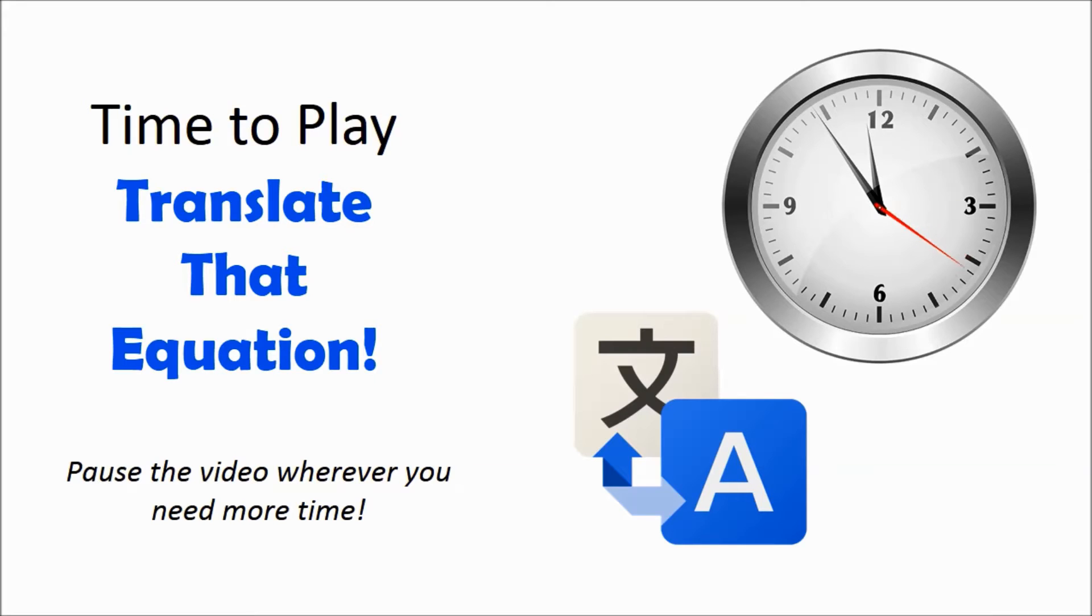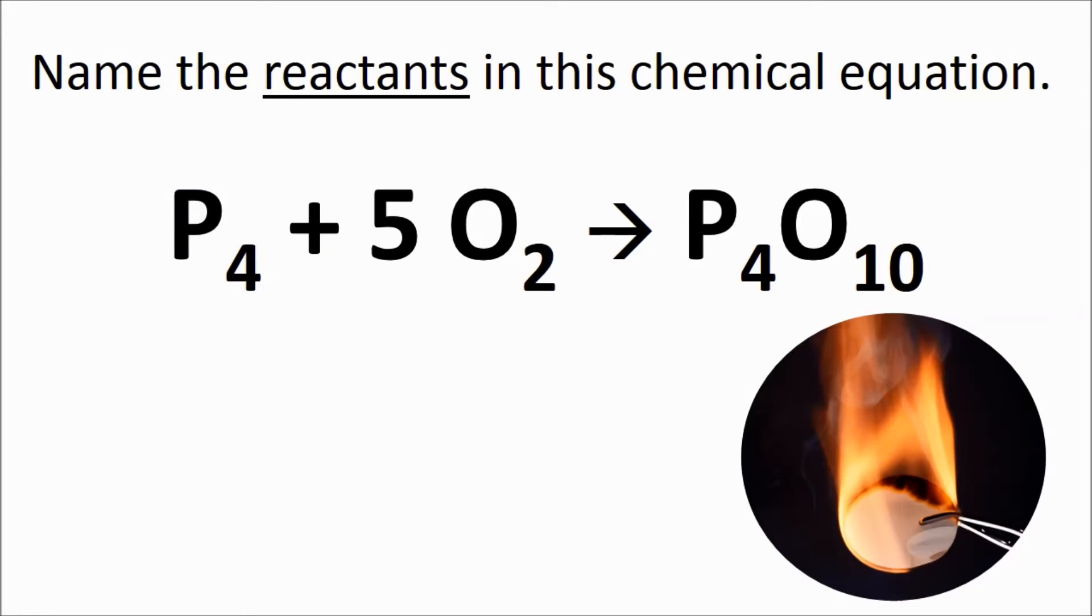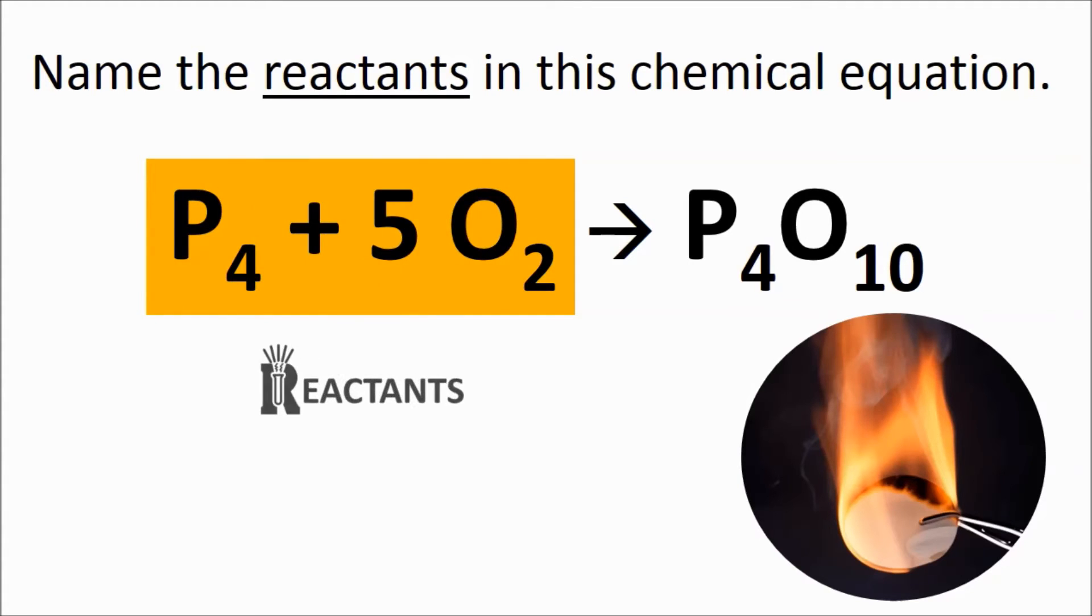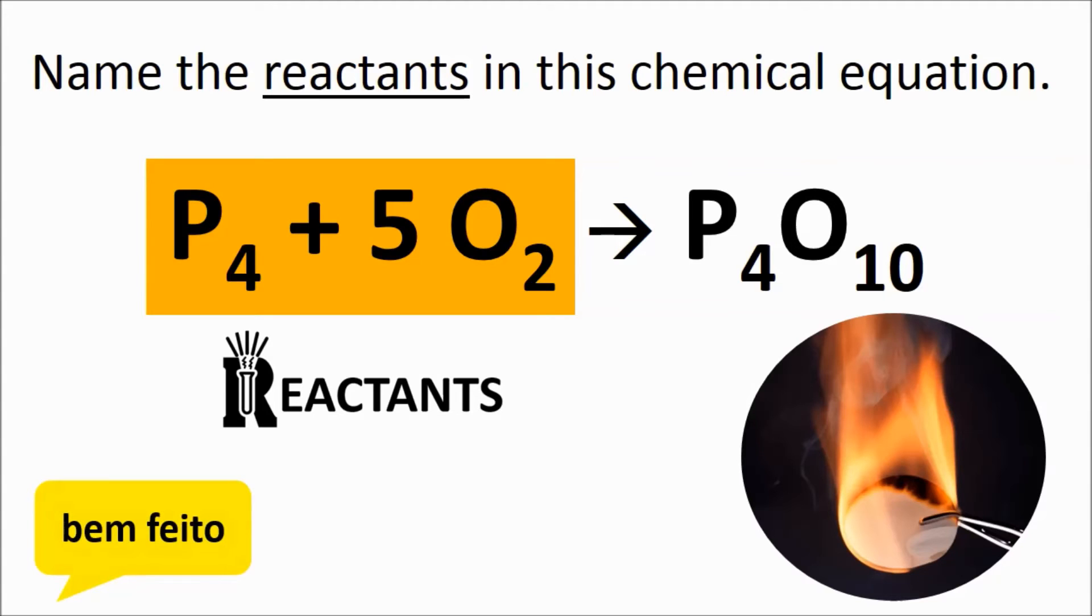Alright, time to test your understanding of chemical equations. Name the reactants in this chemical equation. Remember these are found on the left side of the equation. If you said P4 and 5O2, you got it.